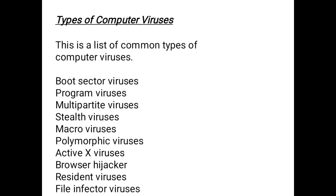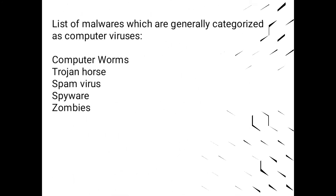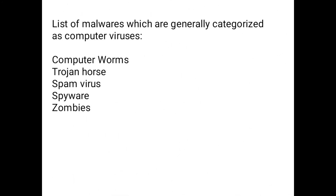There are some types of computer viruses, which include boot sector viruses, computer program viruses, multipartite viruses, stealth viruses, macro viruses, polymorphic viruses, ActiveX viruses, browser hijacker, resident viruses, and file infector viruses. There is also a list of malware generally categorized as computer viruses, which includes computer worms, Trojan horse, spam virus, spyware, and zombies.